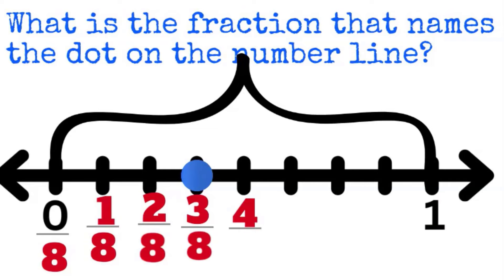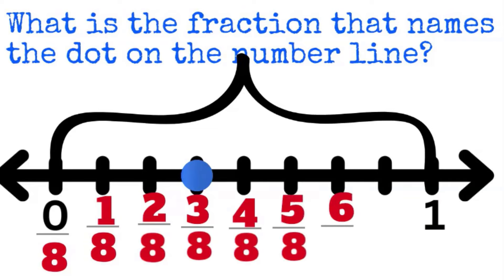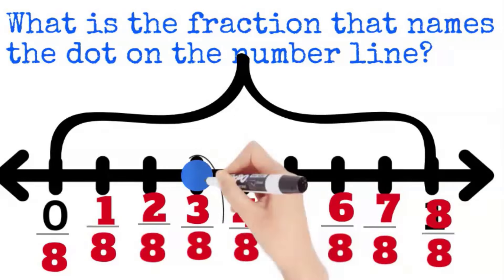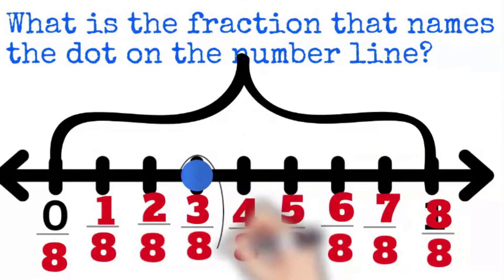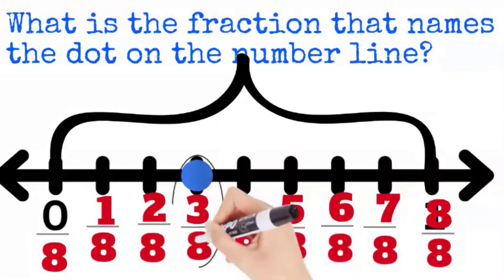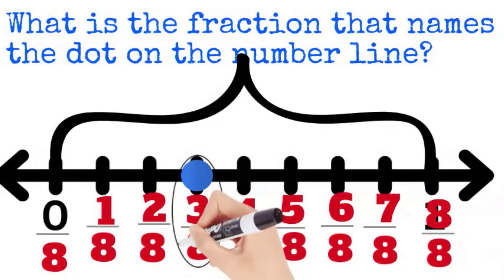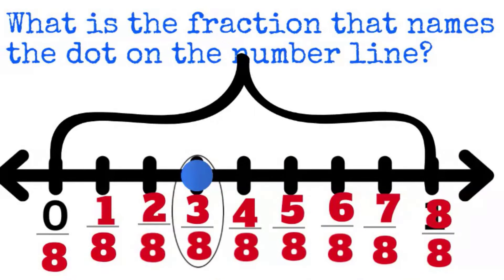So that's zero eighths, one eighth, two eighths, and so on until we get to the whole — eight eighths. But the dot is actually on three eighths. So three eighths is the fraction that names the dot on the number line.